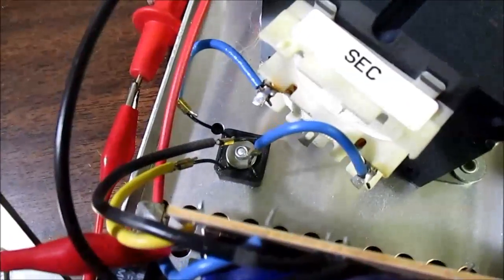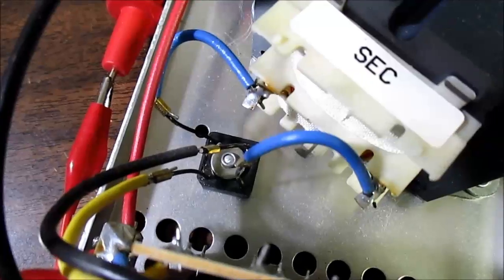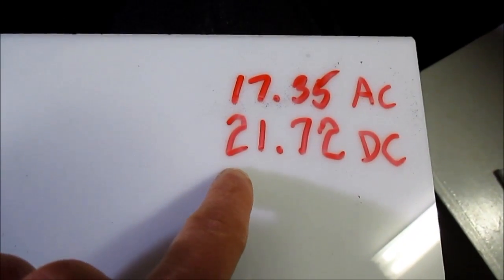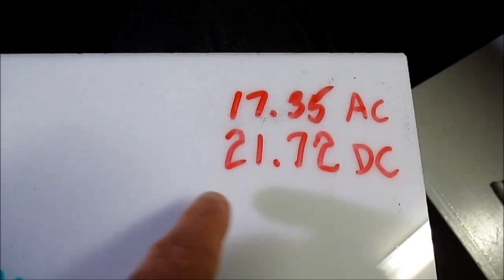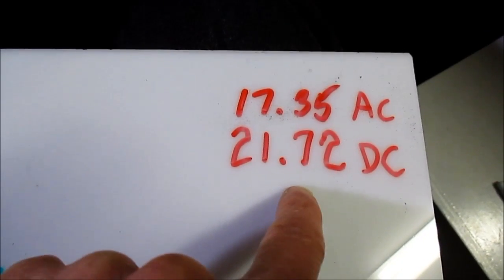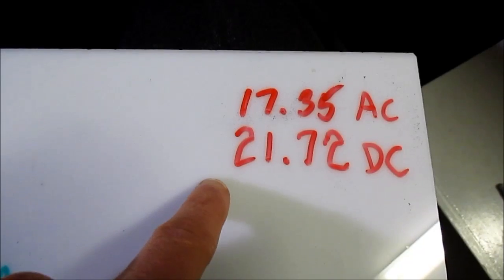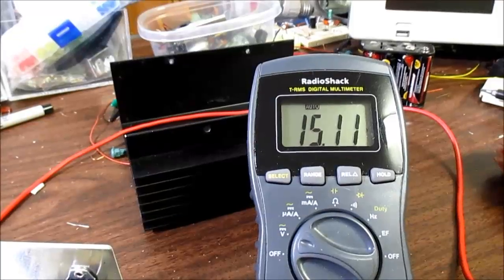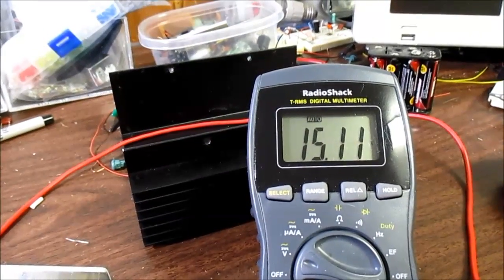Now after you rectify it with the full wave bridge and then filter it with the capacitor, the DC voltage on the inside, I guess of the regulator, I should say before the regulator, is 21.72 volts. And let me get an output reading here. And the regulated output is 15.11 volts.